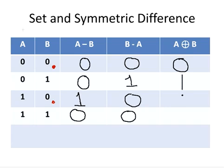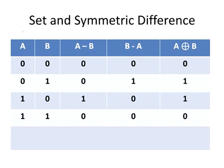0 and 1, the union of that is 1. The union of 1 and 0 is 1. And lastly, the union of 0 and 0 is 0. So those are the membership tables for set difference and symmetric difference.